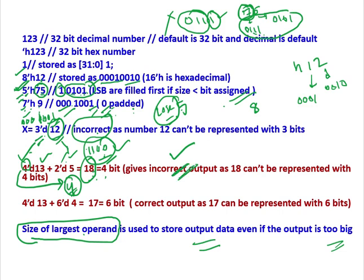4'd13 plus 6'd4. That means 13 decimal plus 4 decimal equals 17. Output should be 17. Size of the largest operand is used, with which the output data are stored. So it is 6'd, 6 means 6 bits. 6 bits is more than what we need. So it is correct, it will give correct output. That means 0s will be padded at MSB side.